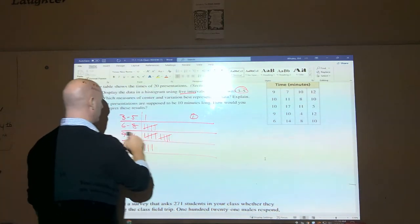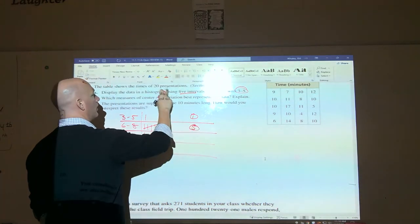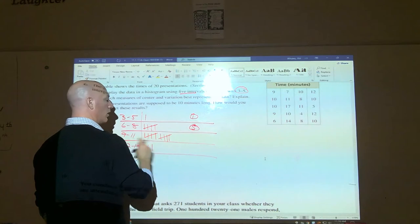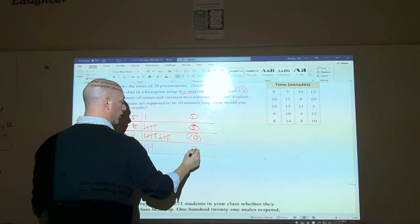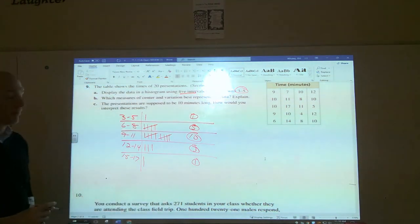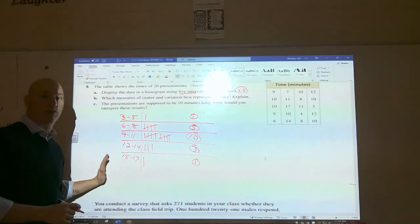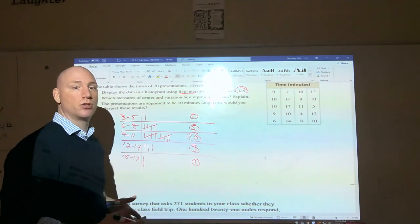3 to 5 happened once, 6 to 8 I had five of the presentations that took that long, 9 to 11 ten of them took that long, 12 to 14 three of them took that long, 15 to 17 one of them took that long. Now that I have my frequency table, my frequency chart or histogram should be real easy to do exactly like we did in the previous section.